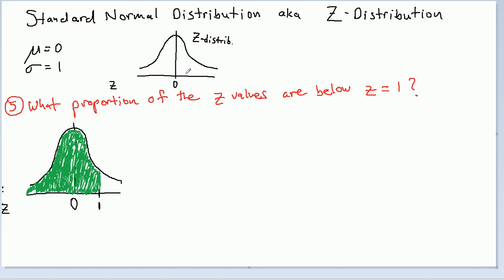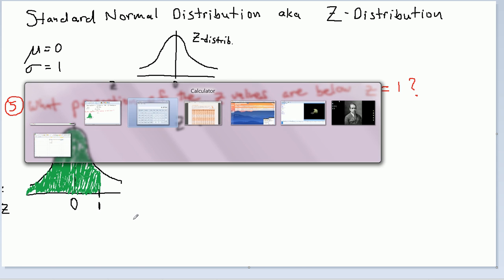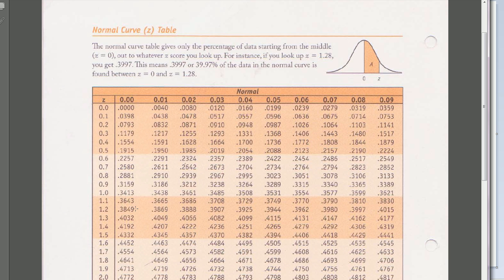If we look up Z equals 1, what we end up getting is Z equals 1, exactly. So, 34.13. That is, the area from 0 to 1 is 34.13%.